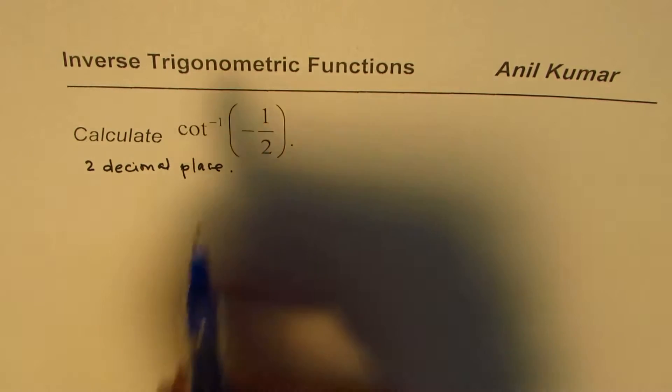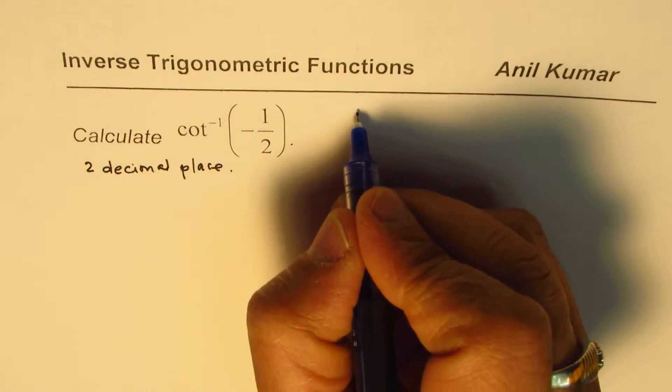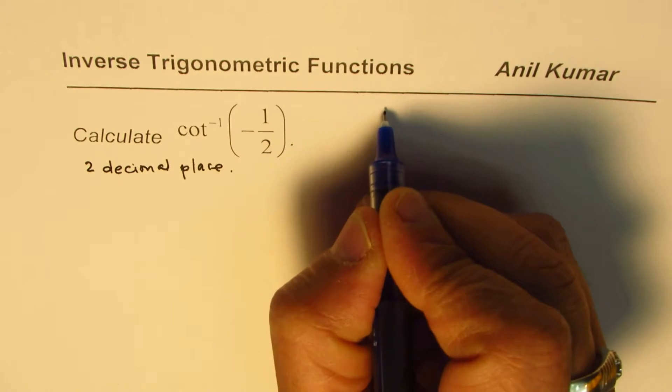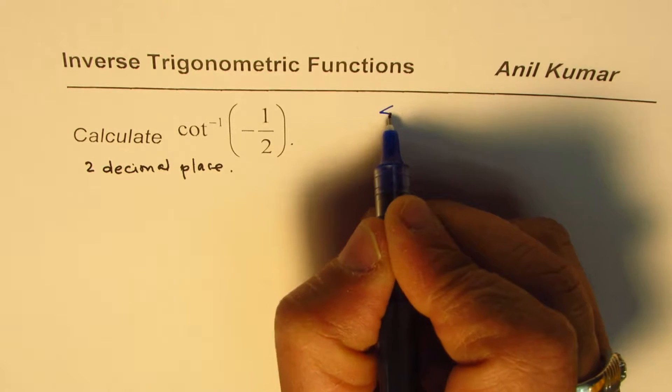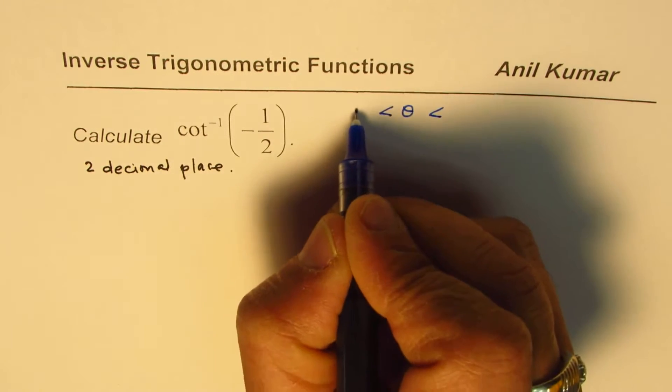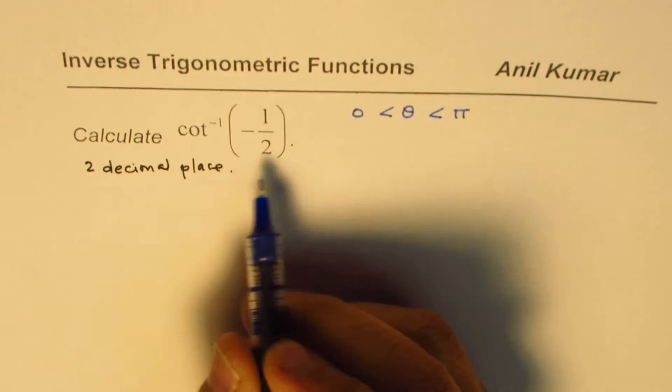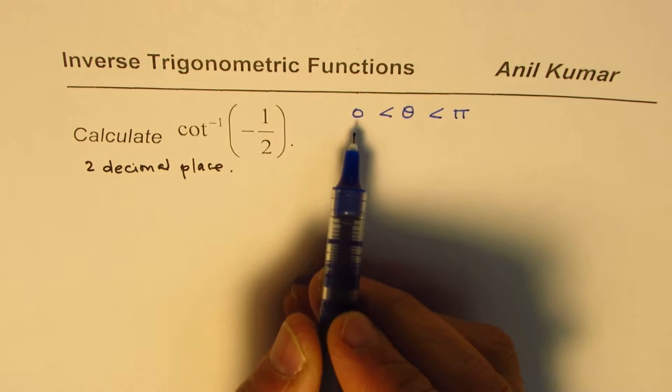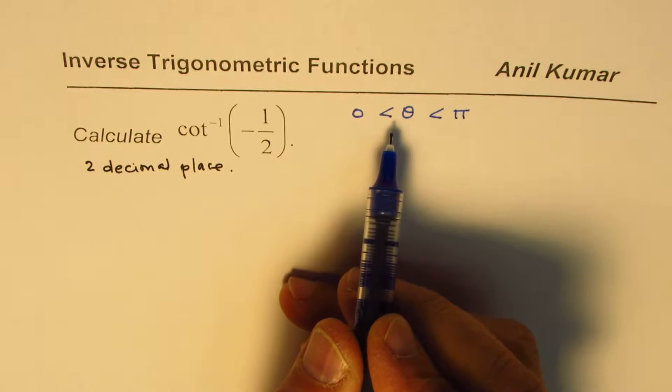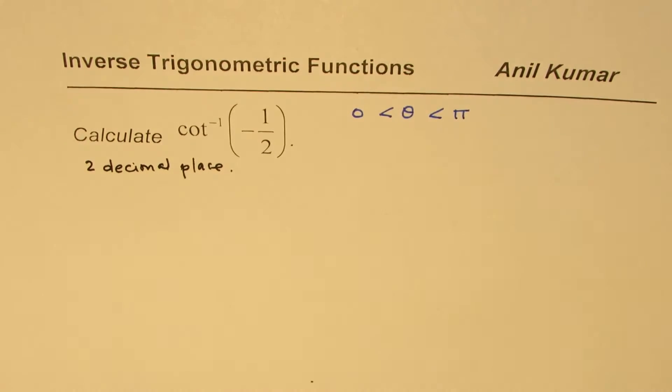First question is, when is cotangent inverse defined? Cot inverse is defined for values which are within theta 0 to pi. It is defined within this interval. In this interval, which other primary trigonometric ratio is defined for its inverse? That is the question.